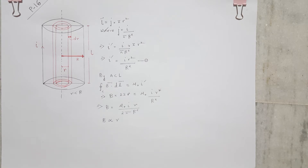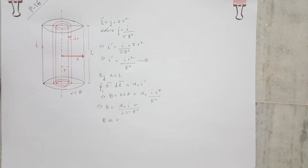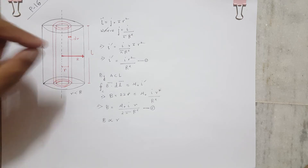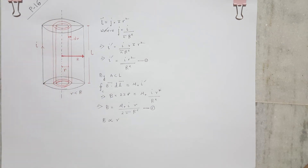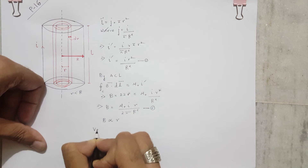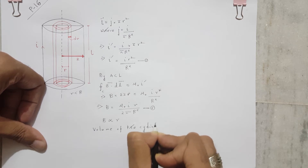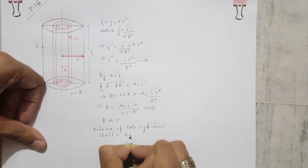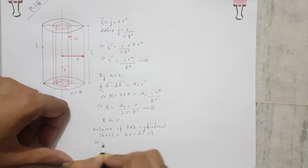Now that we have the magnetic field B, our next concern is to find how much magnetic energy due to this field is enclosed in this cylindrical shell. We find the volume of the cylindrical shell: dV equals the area of cross section multiplied by the length, which gives dV = 2πr·L·dr.